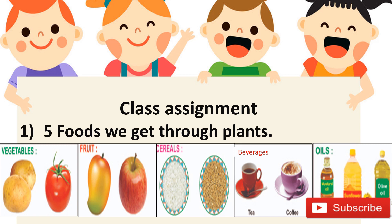And lastly, we can get oil from plants as well. For example, sunflower — sunflower ek plant mein hota hai, aur hum sunflower ke seeds ke through oil extract karte hain, jo phir hamari cooking mein help karta hai. Toh hume different tarahan ke oils bhi plants se milti hain. So the five foods we get through plants are: vegetables, fruits, cereals, beverages, and oils.